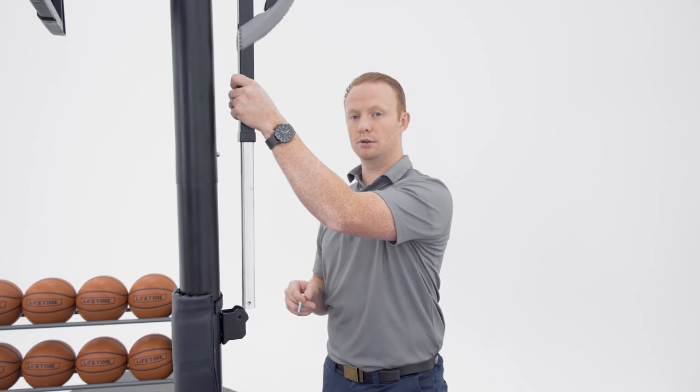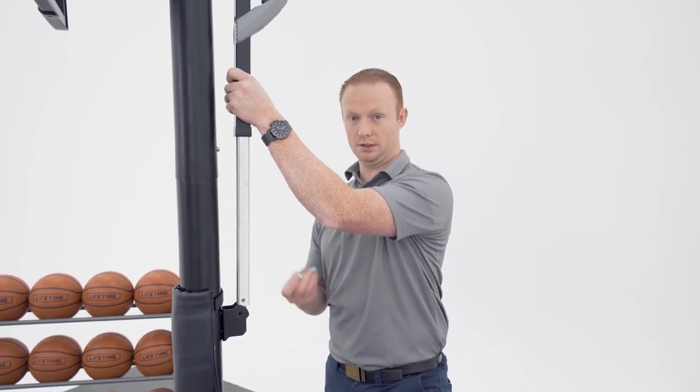Reattach the inner channel to the pull bracket by pulling down on the outer tube so that the holes line up and reinsert the hardware.